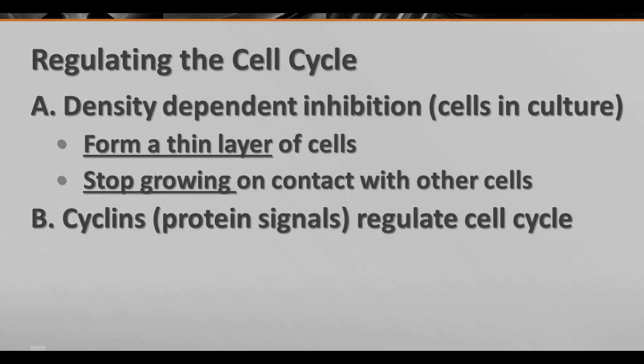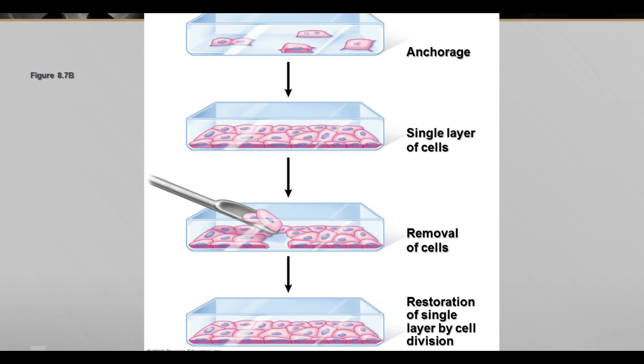Through studying this, scientists have learned that there are chemicals called cyclins, which are protein signals that regulate the cell cycle.